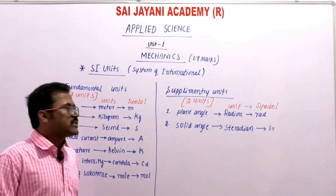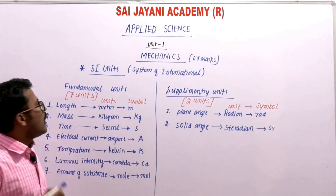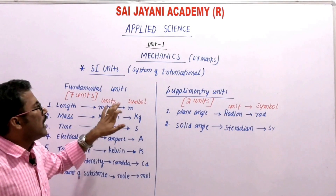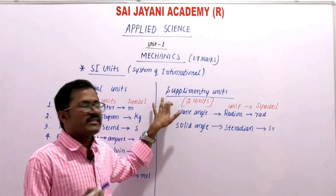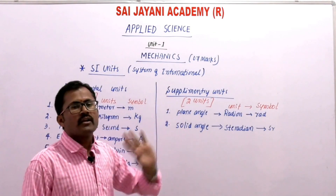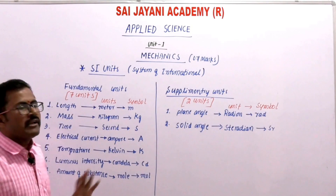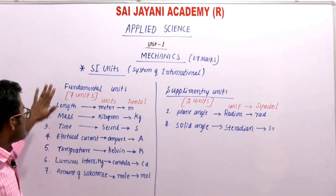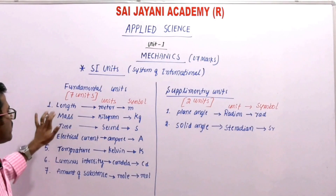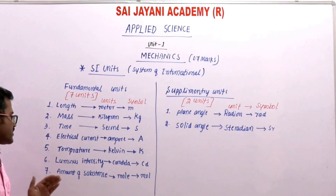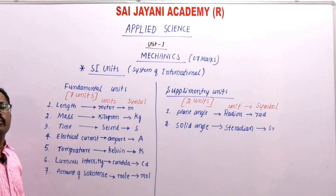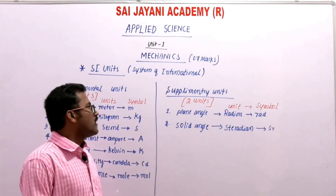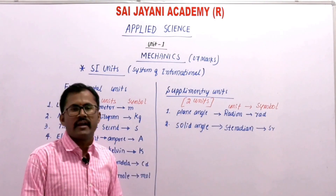So, how many fundamental units are in the SI system? Seven. And how many supplementary units are in the SI system? Two. The seven fundamental units are: length, mass, time, electrical current, temperature, luminous intensity, and amount of substance. The two supplementary units are plane angle and solid angle.